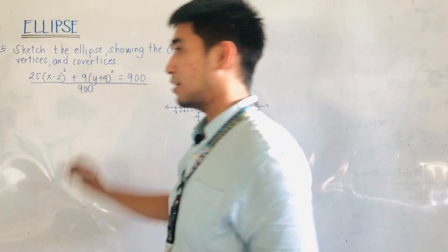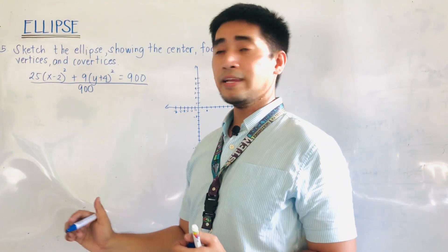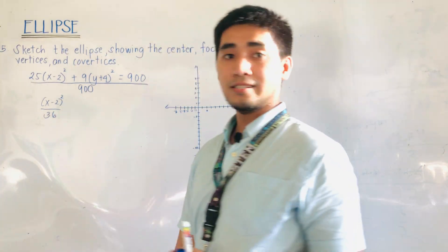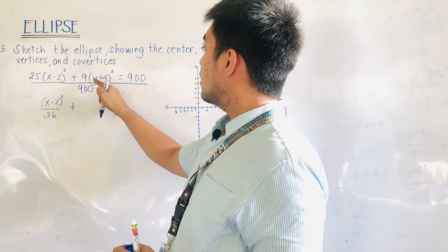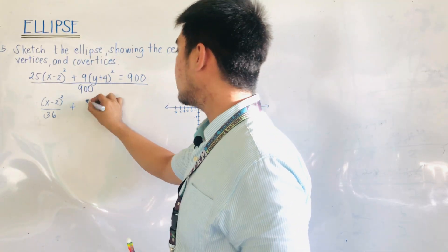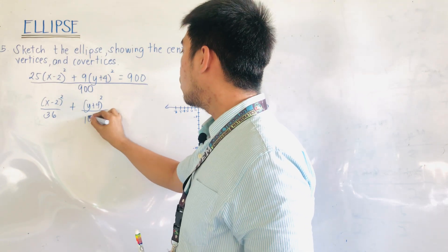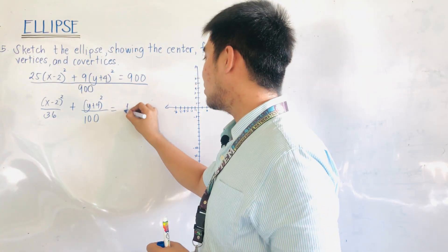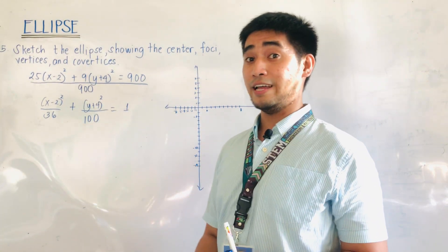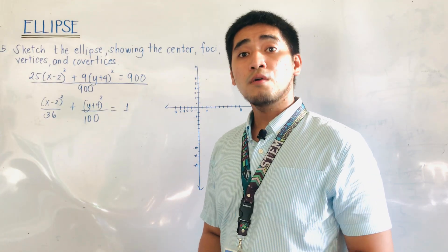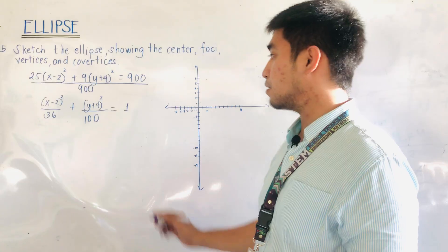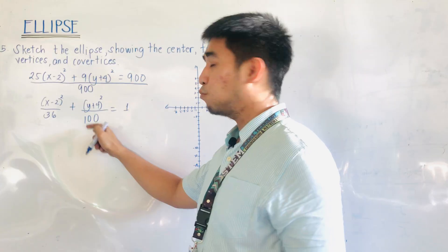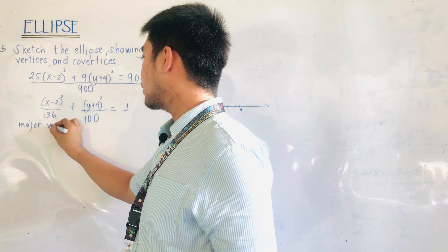Dividing both sides by 900, we get (x minus 2)² over 36 plus (y plus 4)² over 100 equals 1. This is now the standard equation of an ellipse. Next, we identify where the major axis is. Since 100 is greater than 36, and 100 comes with y, we call this a major vertical axis.